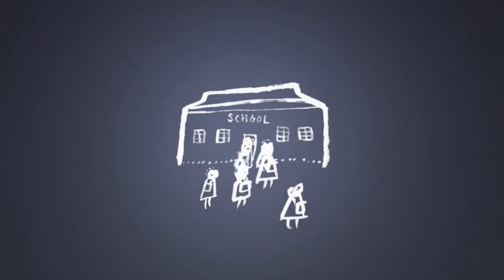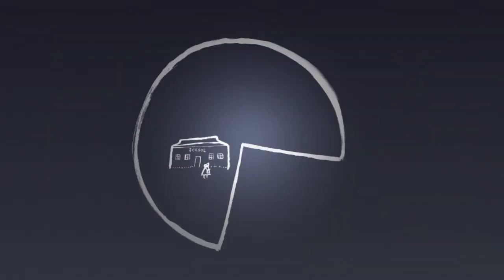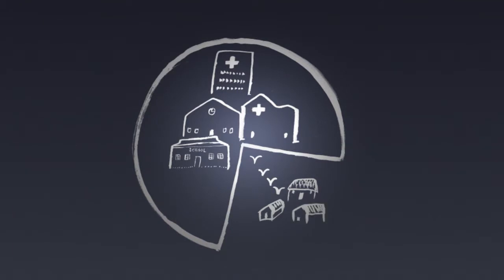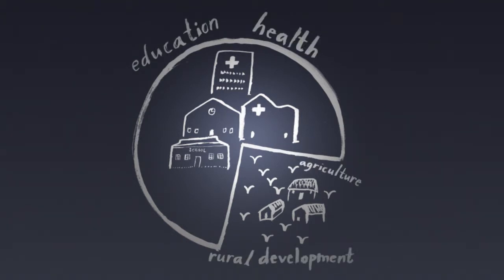A substantial part of this aid has been directed to the education and health sectors. Education and health receive more than half of the total bilateral aid, whereas by contrast, the agriculture and rural development sectors have received one-fifth of the total aid allocated to support economic and productive sectors.